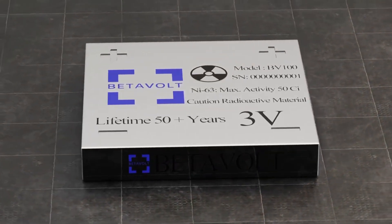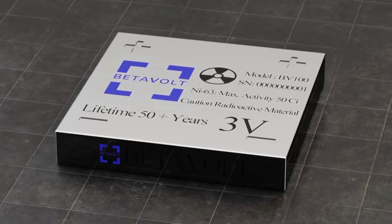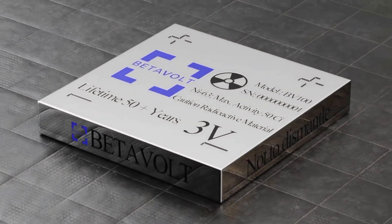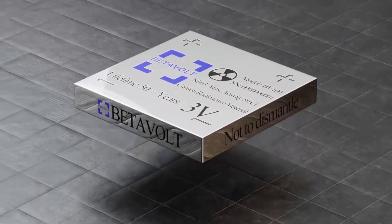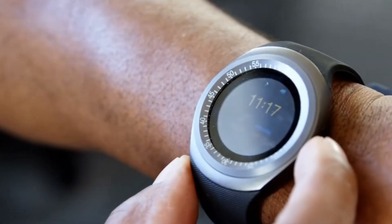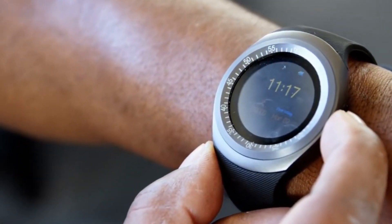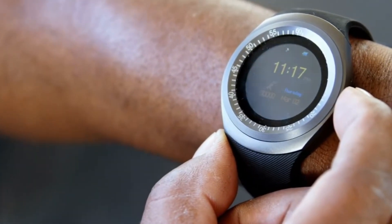However, the battery's power is currently low, around 100 microwatts. Betavolt aims to increase the power to 1 watt soon, which would allow powering small gadgets. A battery that doesn't require charging and doesn't need replacement for decades.